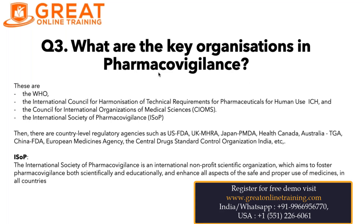For the question of what are the key organizations in pharmacovigilance, you need to mention organizations like the WHO (World Health Organization), the International Council for Harmonization (ICH), the Council for International Organizations of Medical Sciences (CIOMS), and the International Society of Pharmacovigilance (ISoP). Along with these, there are country-level regulatory agencies like US FDA, UK MHRA, Japan PMDA, Health Canada, European Medicines Agency, and CDSCO India.